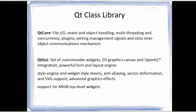Let's talk about Qt libraries. There are two major Qt libraries: Qt Core and Qt GUI. In Qt Core you get file I/O, event and object handling frameworks, multi-threading, concurrency frameworks, plugins, settings management like slots and signals, and many other frameworks. In Qt GUI, the set of customizable widgets, 2D graphics canvas, and OpenGL integration are the key parts.